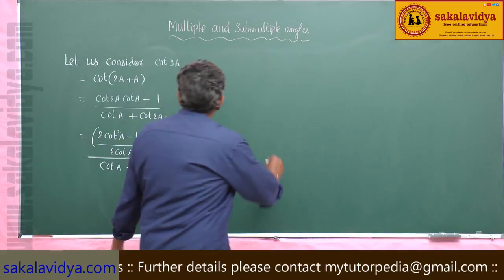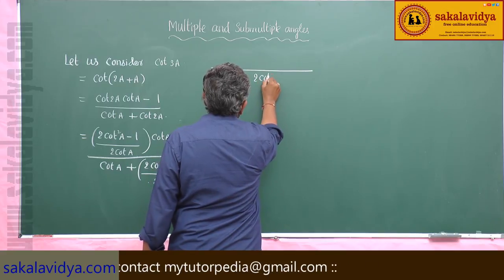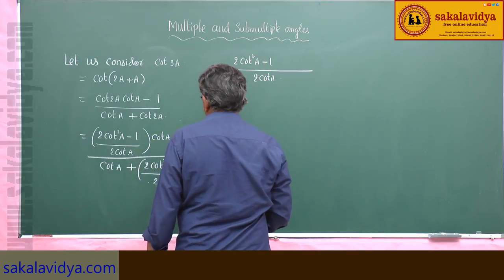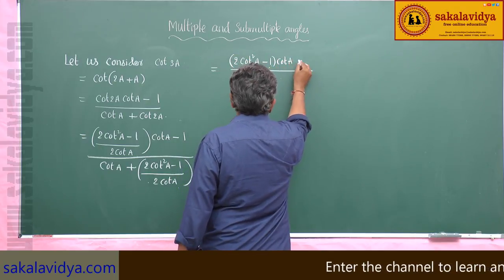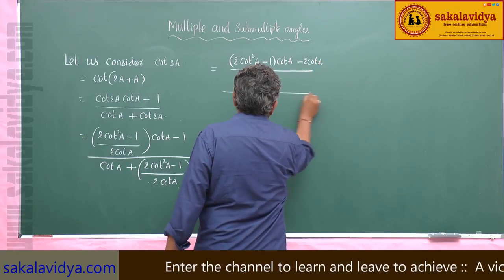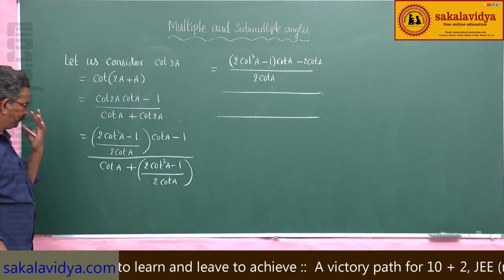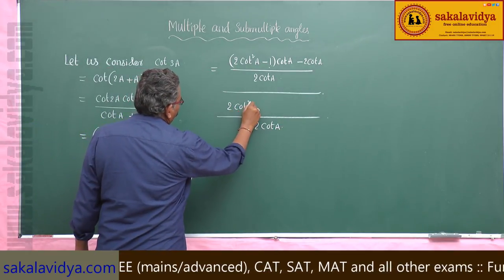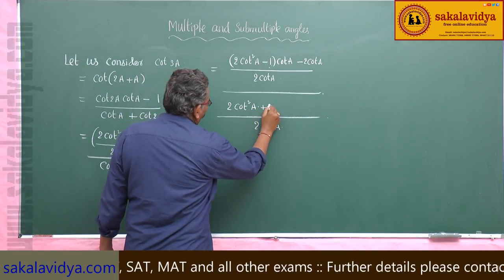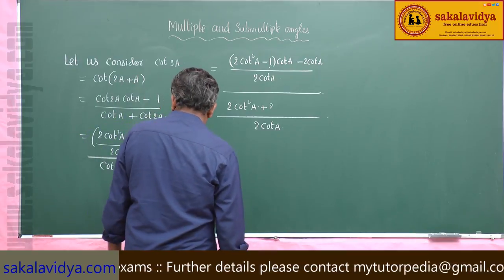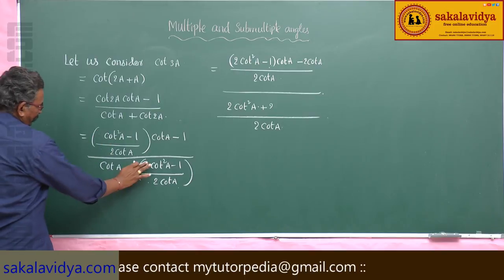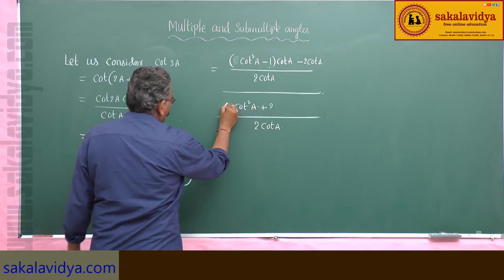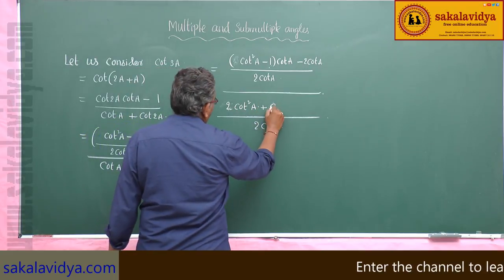Taking 2cot(a) as the LCM, the numerator becomes: (2cot²a - 1)·cot(a) - 2cot(a), which simplifies to 2cot³a - cot(a) - 2cot(a). The denominator with LCM 2cot(a) becomes: 2cot²a + 2cot²a - 1, simplifying to 2cot²a - 1.